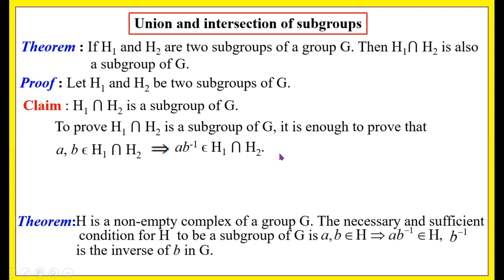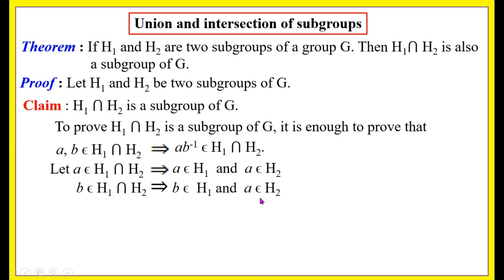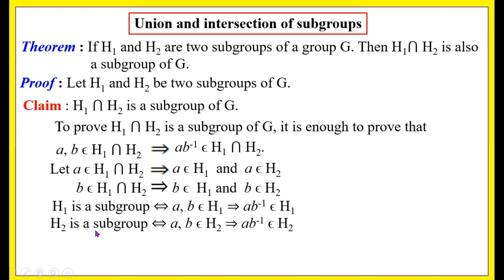Now a, b belong to H1 ∩ H2 means a belongs to H1 and a belongs to H2, and b belongs to H1 and b belongs to H2. Since H1 is a subgroup of G, a, b belong to H1 implies a·b⁻¹ belongs to H1. Similarly, since H2 is a subgroup of G, a, b belong to H2 implies a·b⁻¹ belongs to H2.